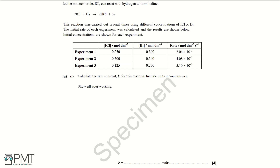Part A, Part 1: calculate the rate constant K for this reaction, including units, showing all working. The key here is that we're working out the rate constant K. The general rate equation we use is: rate equals K multiplied by the concentrations of your reactants raised to whatever the order of reaction is with respect to each reactant.